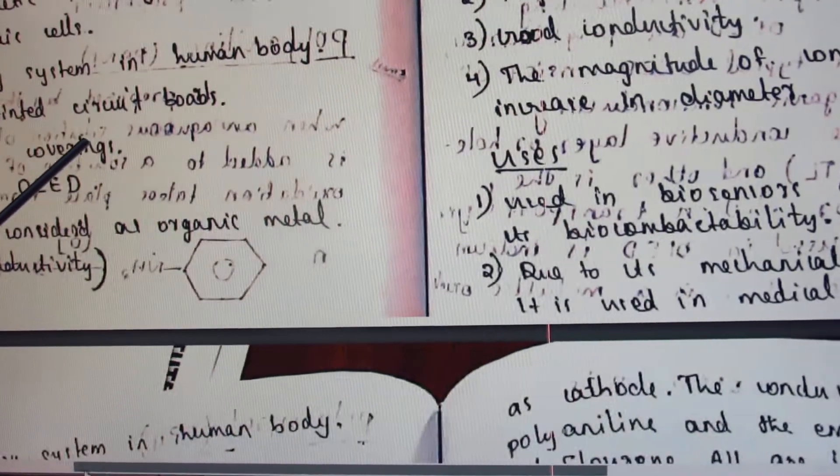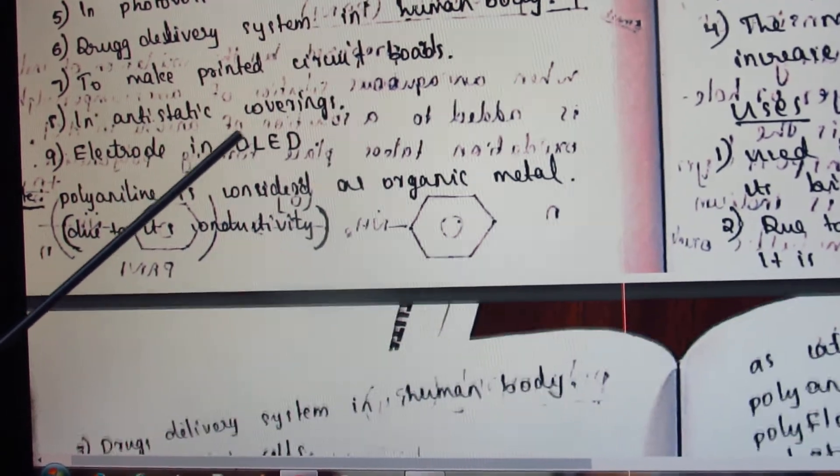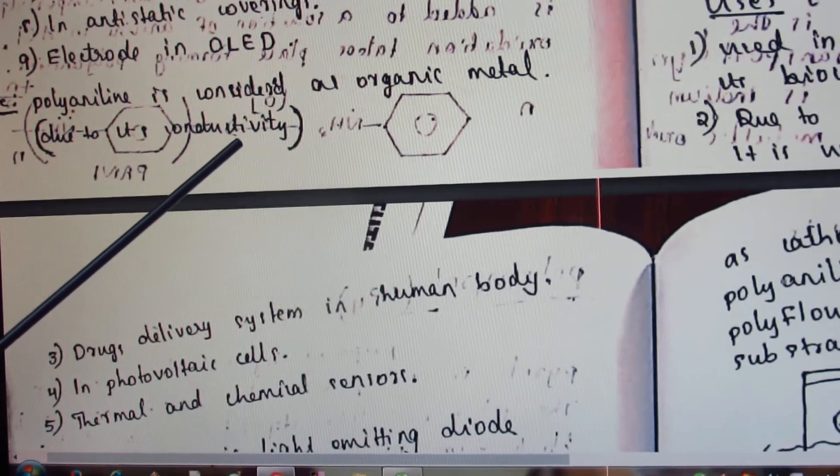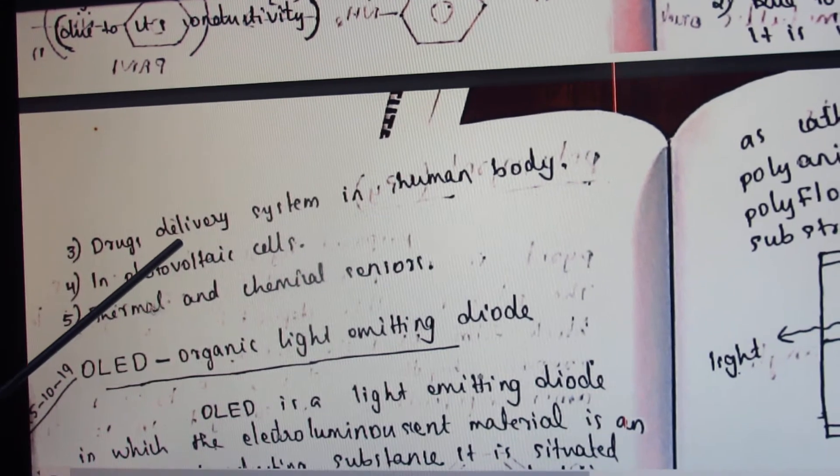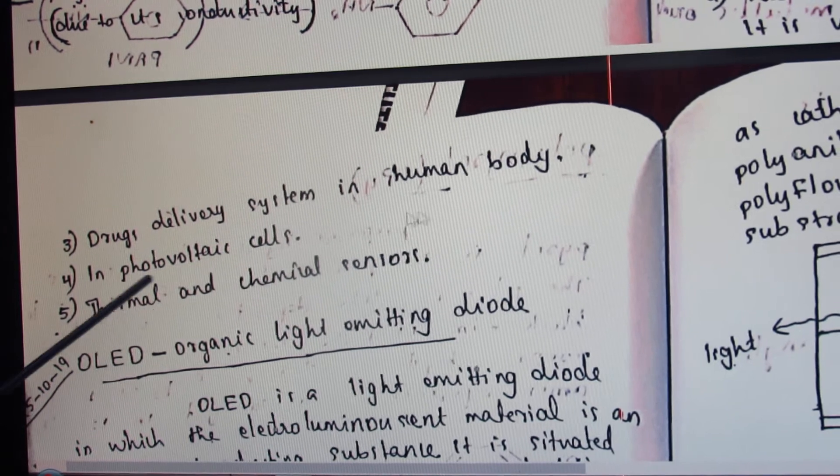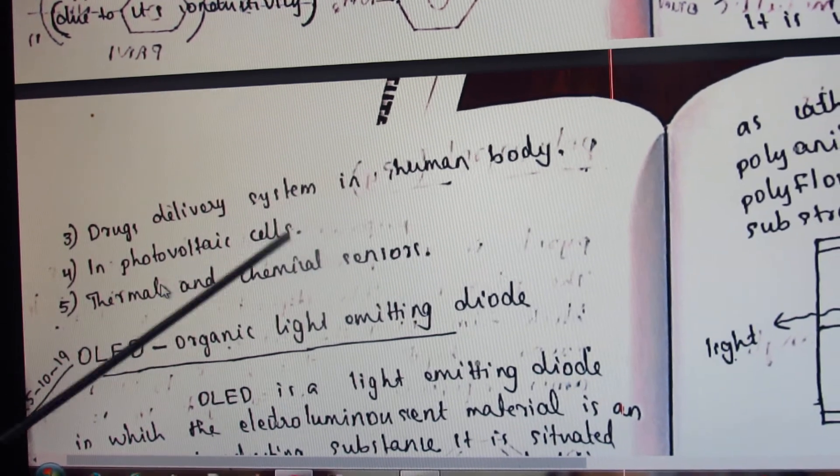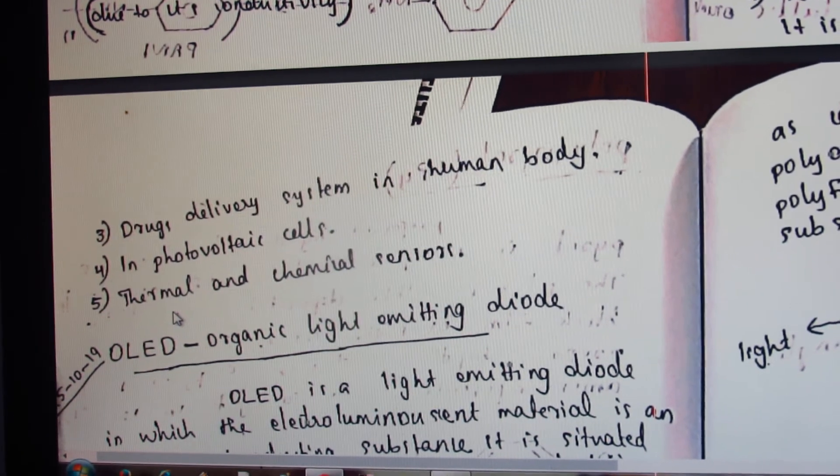It is used in analytical sensors and biosensors, like polyaniline. It is used in drug delivery systems in the human body. It is also used in photovoltaic cells and in thermal and chemical sensors.